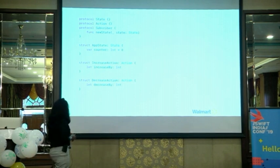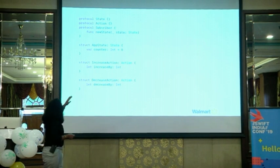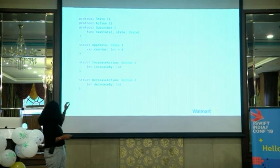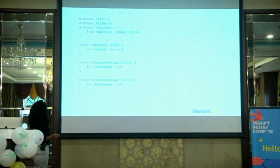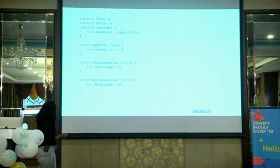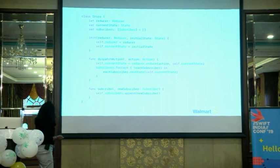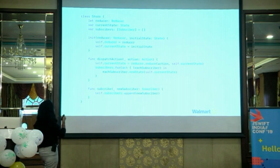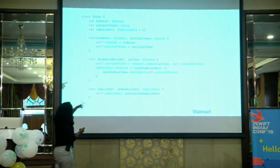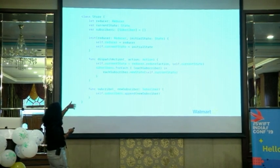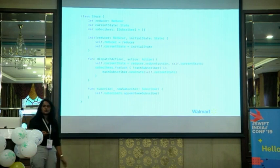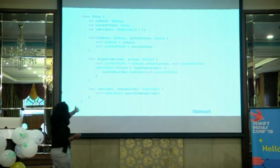This is a very simple example depicting how the whole system works. You have a state, you have an action, and you have a subscriber — all the view controllers or interactors or other models which are trying to listen to state changes. In this counter example, there are two types of actions: an increase action and a decrease action. The store has a reducer, a current state, and an array of subscribers. Every time a store is initialized, you need to pass it an initial state. A very important function is the dispatch action function, which takes an action, passes it along with the current state to the reducer, and a new state is passed back to the store.